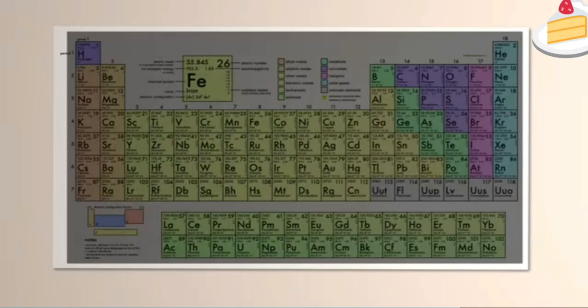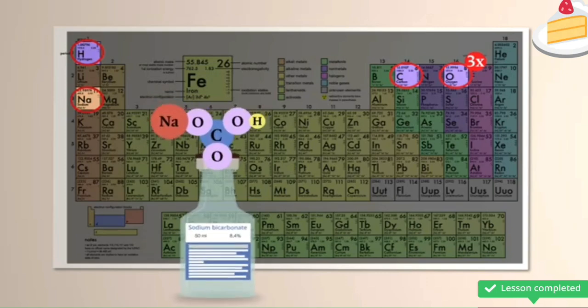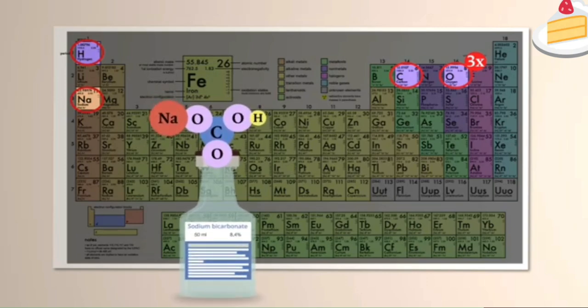If instead, you put one atom each of the elements sodium, hydrogen, and carbon, together with three oxygen atoms, then you have sodium bicarbonate, which is what you find in baking powder.